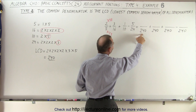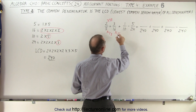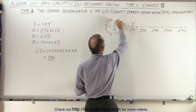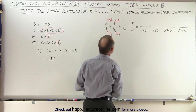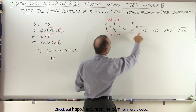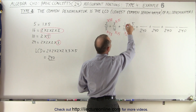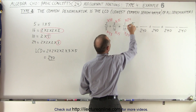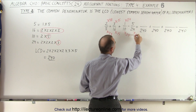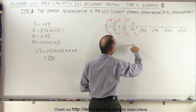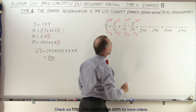16 goes into 240 fifteen times, so I had to multiply 16 by 15 to make it 240, which means I must multiply that numerator by 15 as well. 10 goes into 240 twenty-four times, which means I have to multiply that numerator by 24. And 24 goes into 240 ten times, so I have to multiply that numerator by 10 as well.